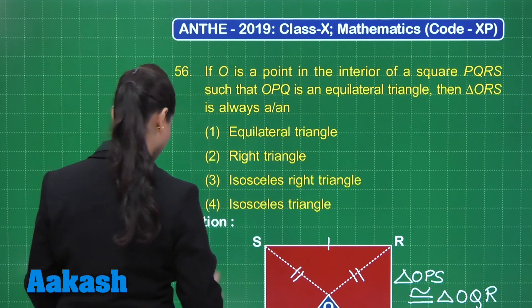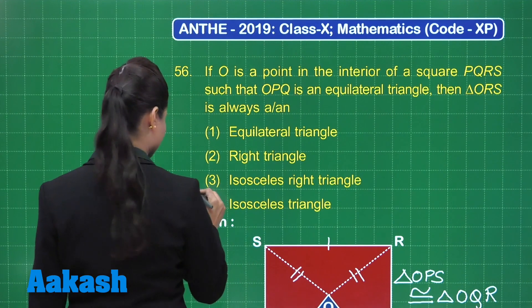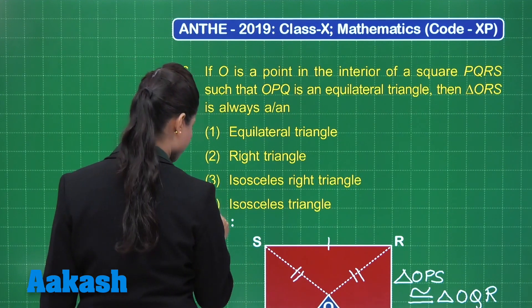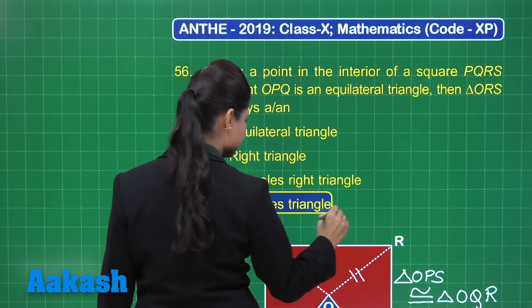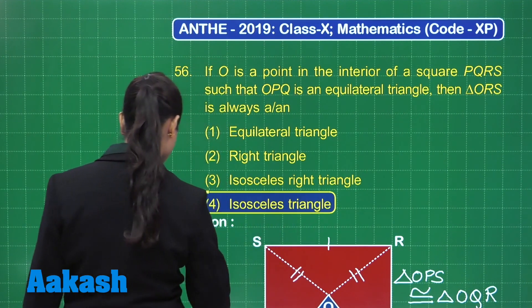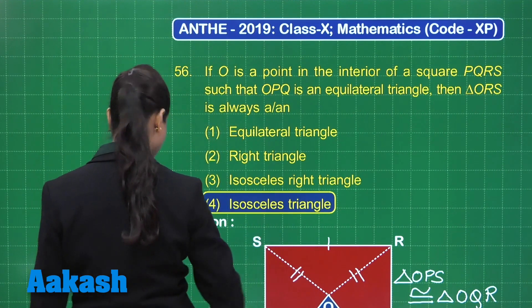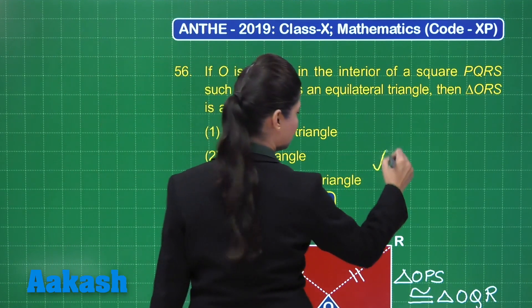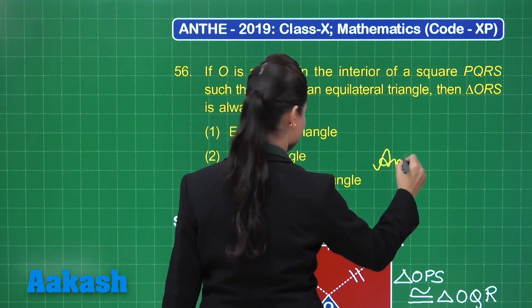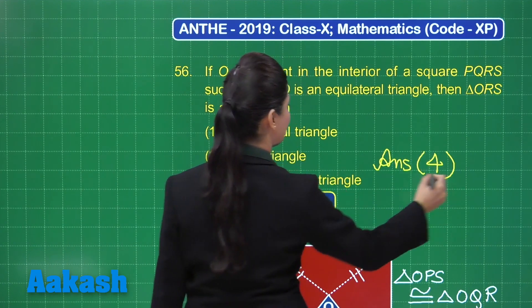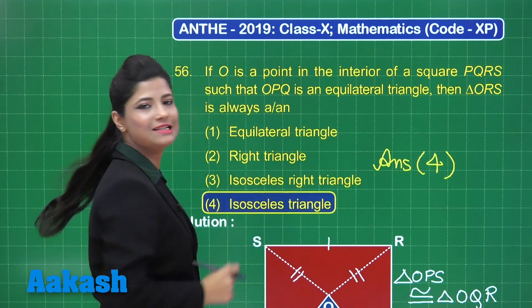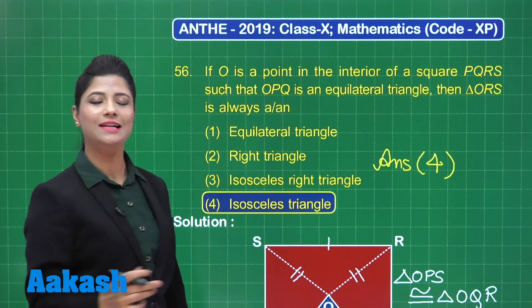So triangle ORS is always an isosceles triangle. The correct answer for this question is option number 4. I hope that is clear.